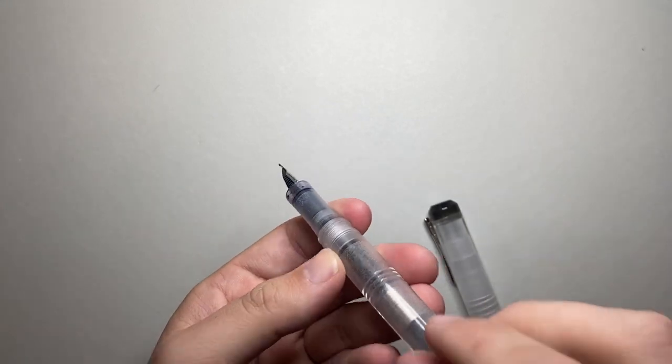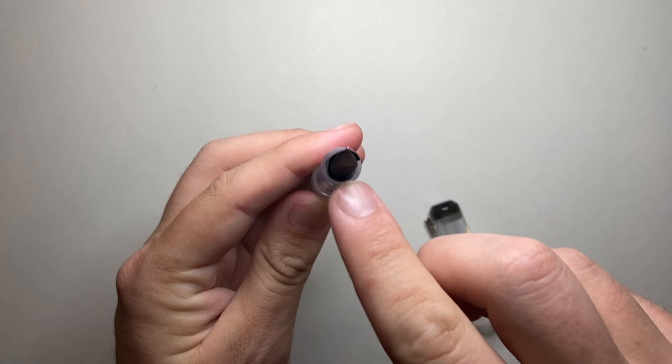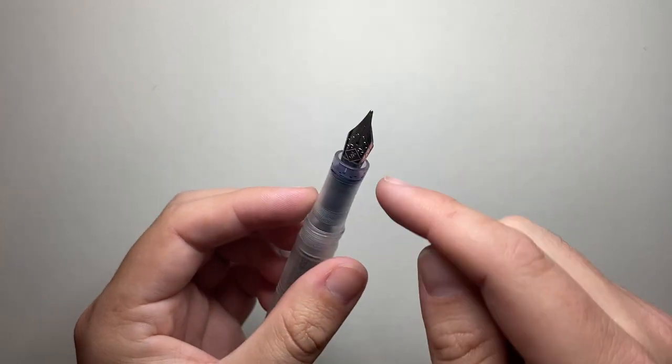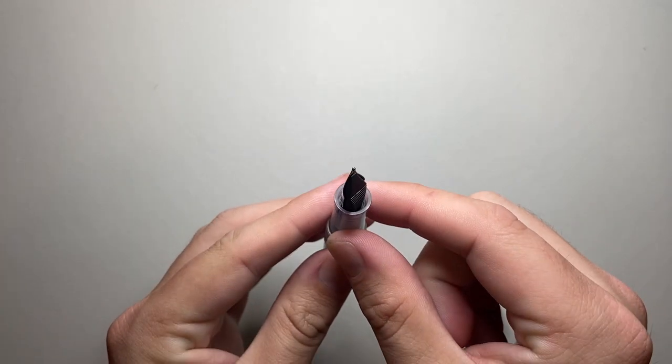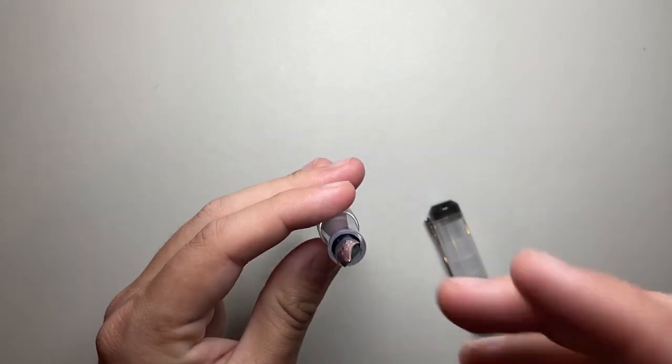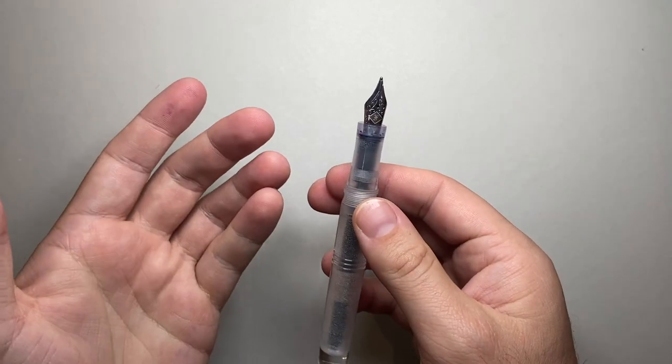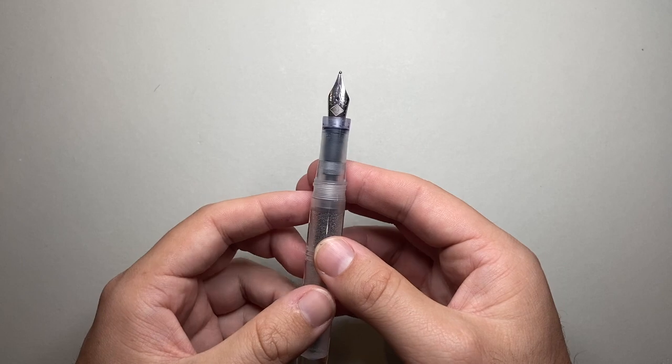So if you fill this pen as a cartridge converter, like a converter in the bottle of ink, that section has to go in because the breather hole is right up in there. So you are going to get ink in there, and it's actually really hard to clean that out, like trying to get paper towel or something in around the nib.